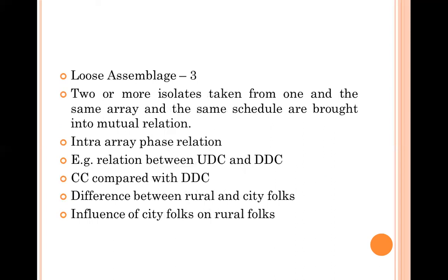Loose Assemblage 3 is intra-array phase relation: within a single main class, under a single fundamental category, from a single array, you take any two isolated ideas and study the relationship between them. For example, the relation between UDC and DDC, or the difference between rural people and city people. In colon classification, there is a phase relation table showing kinds of phase relations: general, bias, comparison, difference, tool, and influencing — covering all three types of loose assemblage.